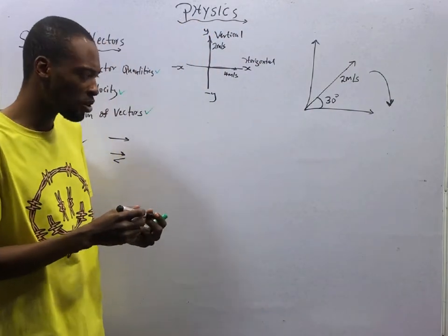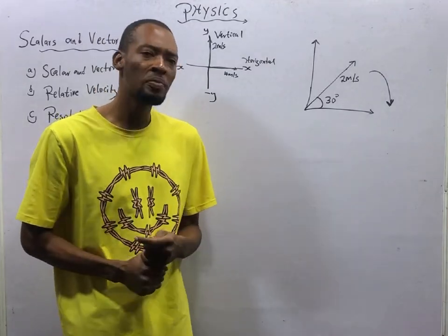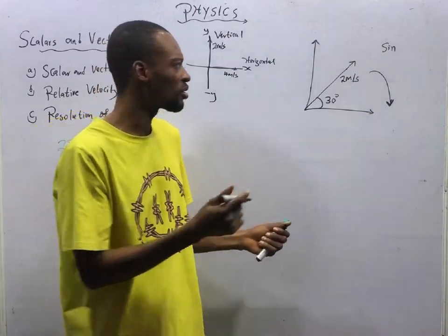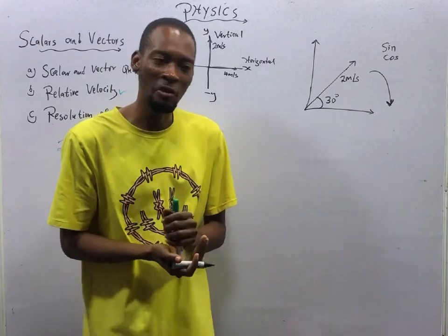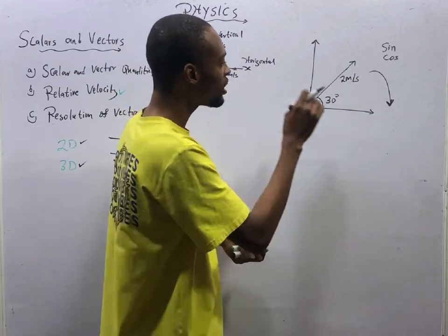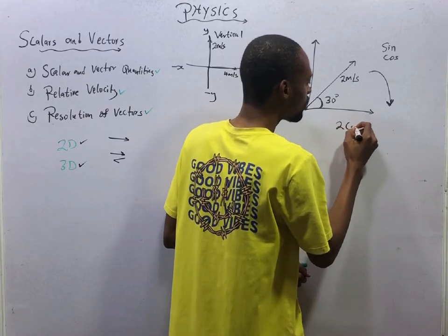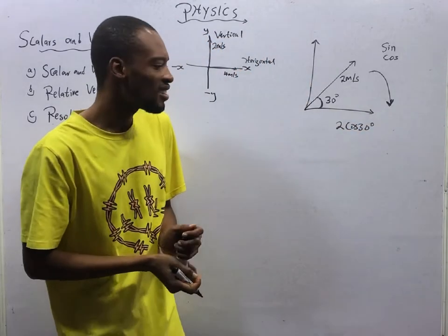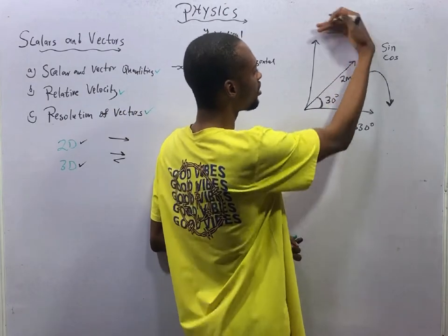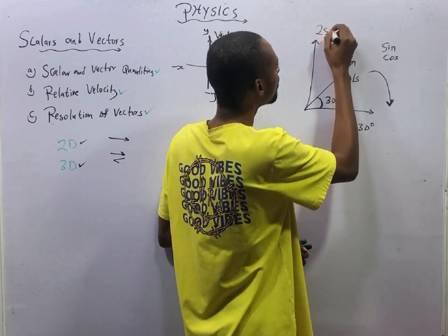Anytime you are resolving vectors and you are wondering when to use cos and when to use sin — when you are opening up the angle, you use sin. When you are closing the angle, you use cos. If I say resolve these 2 meters per second to the horizontal or to the X-axis, you are simply closing — you are pushing it down to the X-axis, closing these 30 degrees. Since you are closing, it is 2 cos 30 degrees. If I say resolve this to the vertical direction or to the Y-axis, as you push it that way, the angle is opening. Therefore, it is sin — so here it is 2 sin 30 degrees.